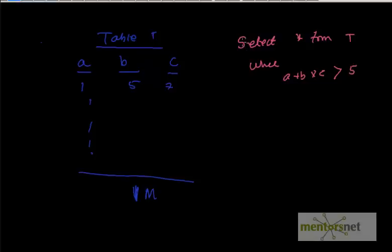So if I have to run this query, then what Oracle is going to do is basically compute on this thing A plus B, 1 plus 5, 5 multiplied by 7 is 35, is greater than 5, then okay it is going to fetch this row.